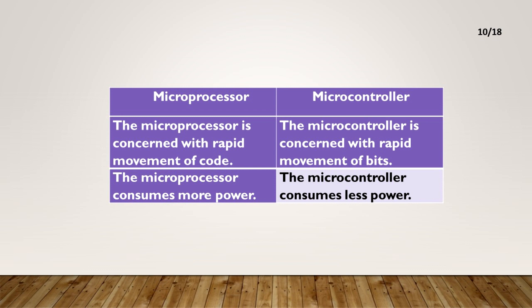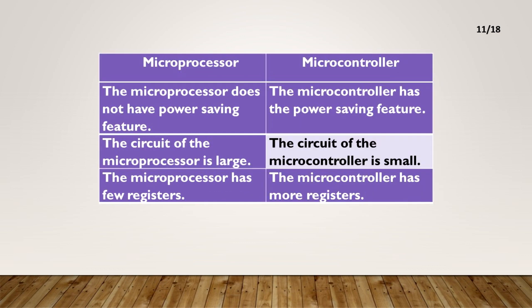The microprocessor consumes more power and does not have a power saving feature. The microcontroller consumes less power and has a power saving feature. The circuit of the microprocessor is large. The circuit of the microcontroller is small.